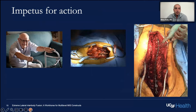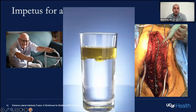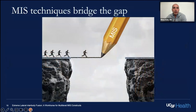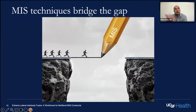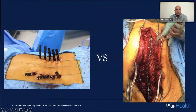MIS is supposed to bridge that gap from an aging, frail population to where surgery could help with the debilitating symptoms of deformity. So we can do something minimally invasive — as opposed to a large open procedure.